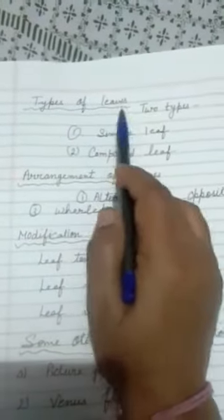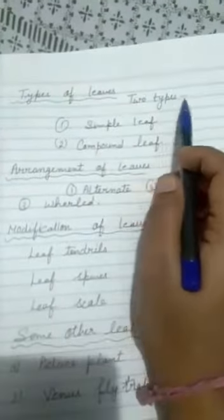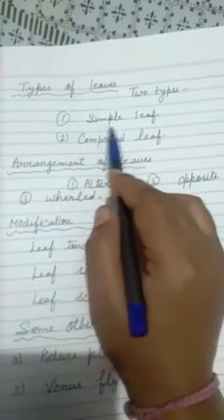This video is a pending part of chapter number 1, the plant life. Now we are going to discuss about the types of leaves. There are two types of leaves. Number 1 is a simple leaf and the second is the compound leaf.